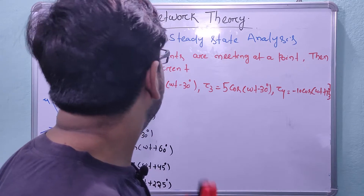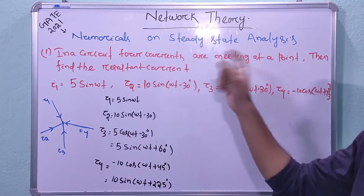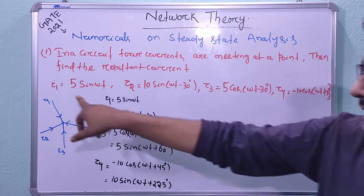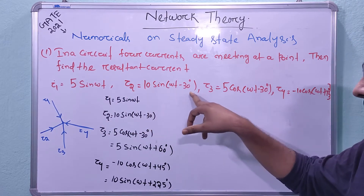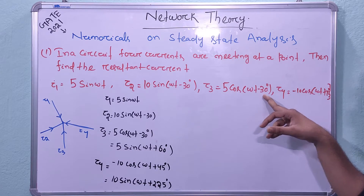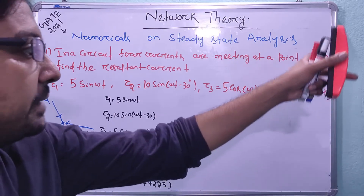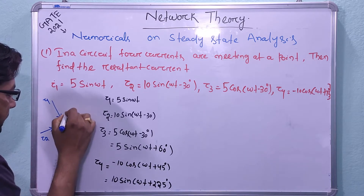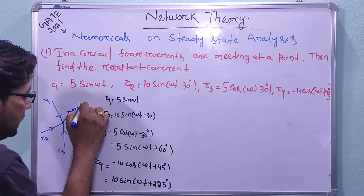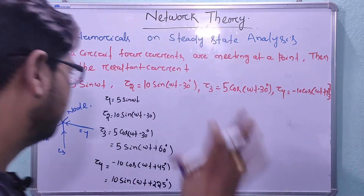Come to the first problem: in a circuit, four currents are meeting at a point — find the resultant current. The four currents are: i1 = 5 sin(ωt), i2 = 10 sin(ωt − 30°), i3 = 5 cos(ωt − 30°), and i4 = −10 cos(ωt + 45°). There are four currents meeting at a node, so we will apply node analysis.